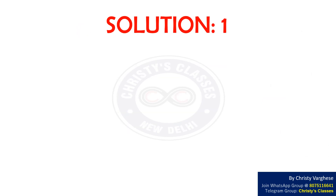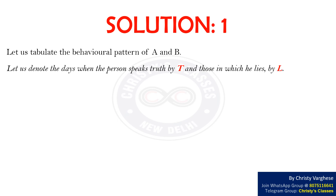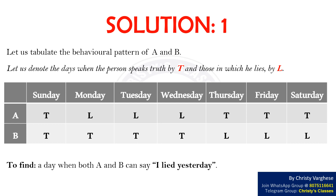Let us consider two solutions for this question. Solution 1: Let us tabulate the behavioral pattern of A and B. The days when the person speaks truth is denoted by T and those in which they lie by L. We are required to find a day when both A and B can say, 'I lied yesterday.'